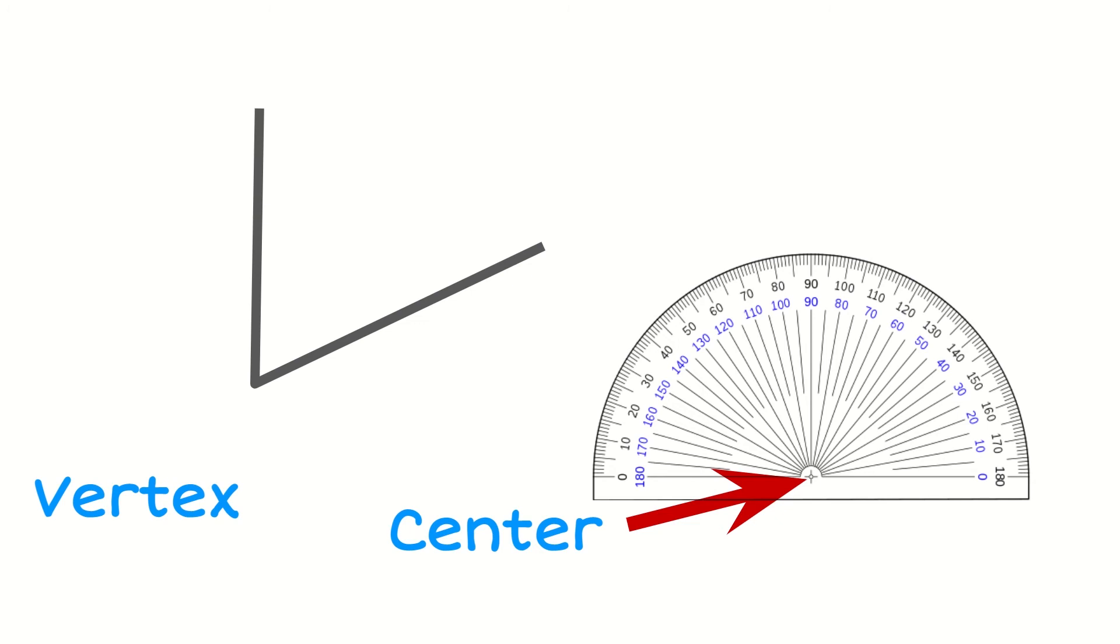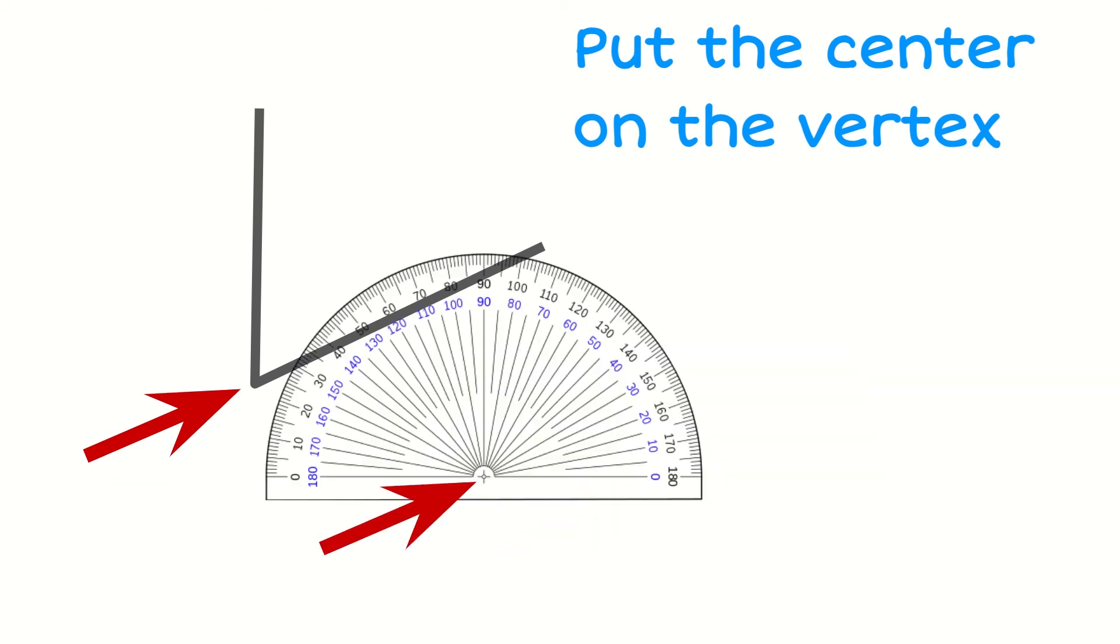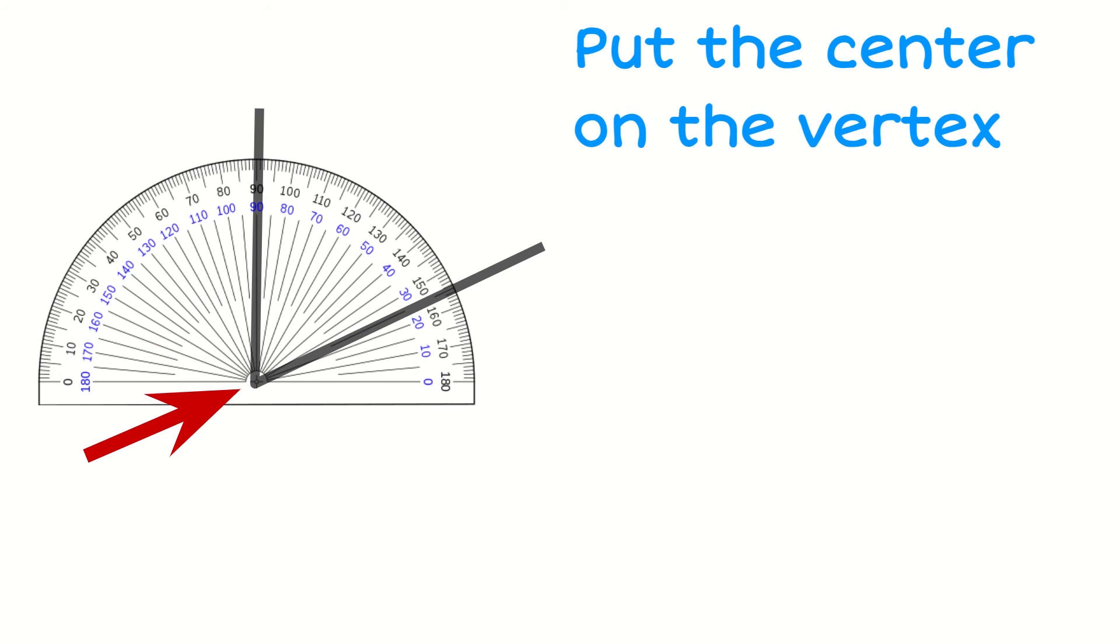Then we need to find the vertex of the angle that we want to measure. The vertex is the corner point, and what we want to do now is put the center of our protractor on that vertex. We're going to move it and line it up. That's our first step.